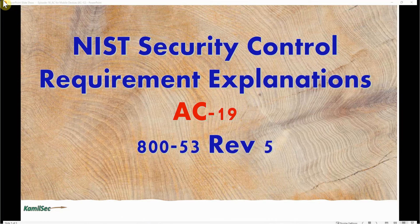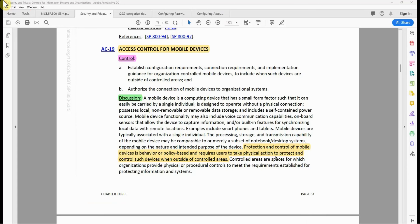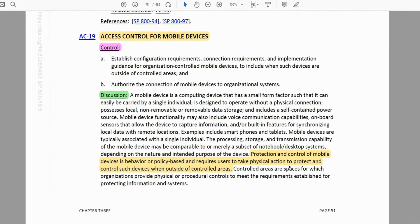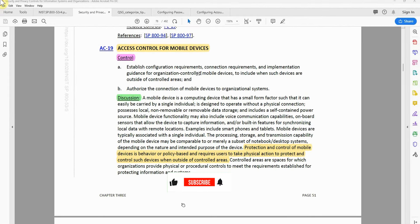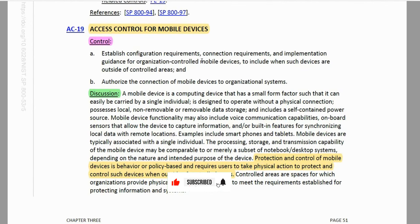Now let's look at the control requirement for AC-19, access control for mobile devices, in NIST SP 800-53 Rev 5. Control part A states: establish configuration requirements, connection requirements, and implementation guidance for organization-controlled mobile devices, including when such devices are outside of the organizational perimeter or premises. It also authorizes the connection of mobile devices to organizational systems.